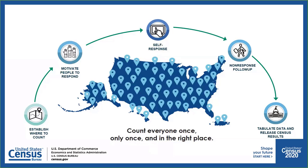Once we figure out where people are living, we then need to motivate them to respond. We do this through the integrated partnerships and communications operation. After we motivate people to respond, we need to make it easy for them to do so. 2020 will be the first census that offers everyone a chance to respond online, by phone, or by mail. But we realize that no matter how seemingly easy we make it, not everyone will self-respond. This is where our non-response follow-up comes in. For those households who do not respond by the beginning of May, we will send census takers into the field to assist them. You will still be able to respond online, by phone, or by mail even while census takers are visiting in May, June, and July.